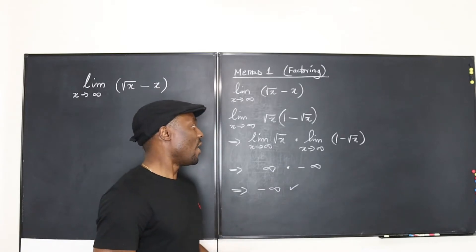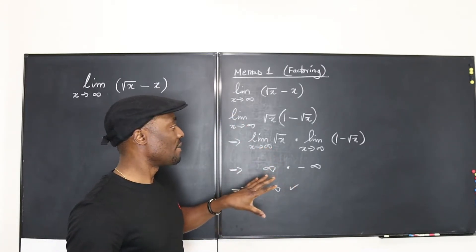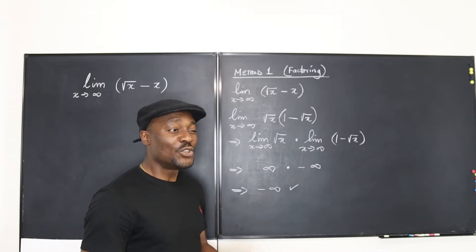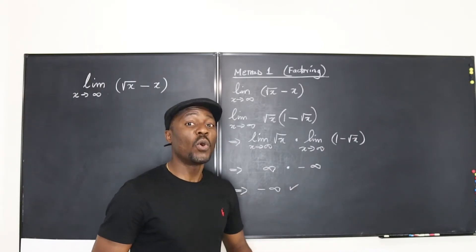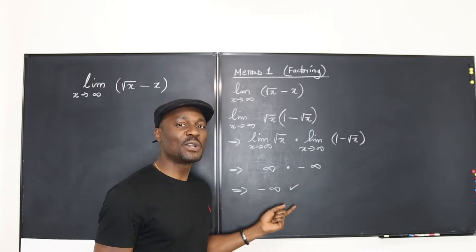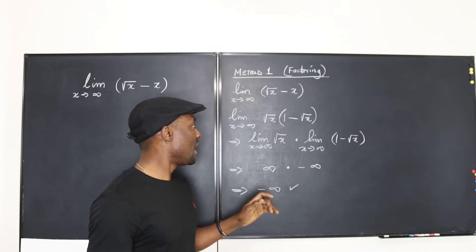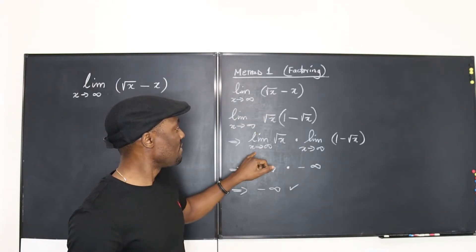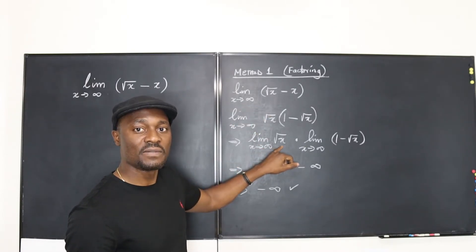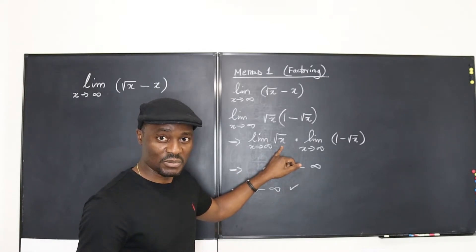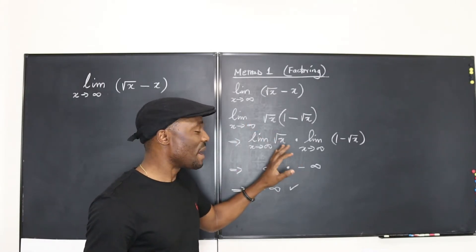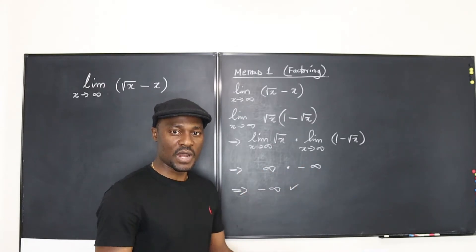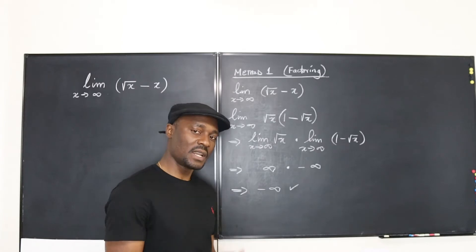Now let's say you were unable to factor. We're going to use the second method, which is the universal method because it will always work. The first method sometimes won't — for example, if you had negative infinity, it would not be easy to plug negative infinity under a square root sign for real numbers. But this other method will always work.